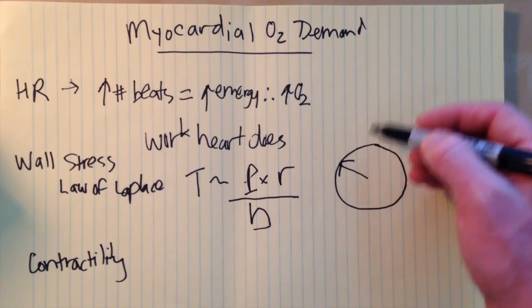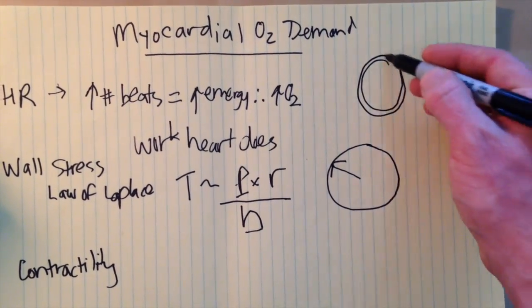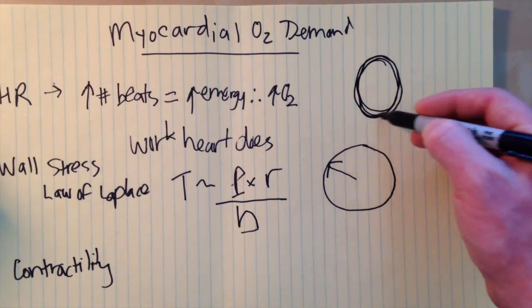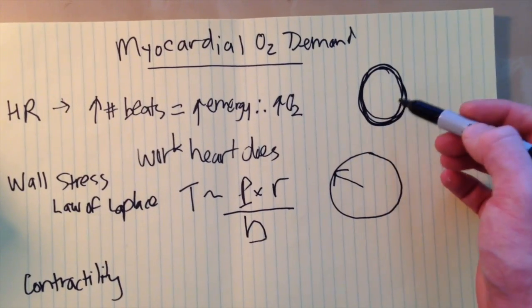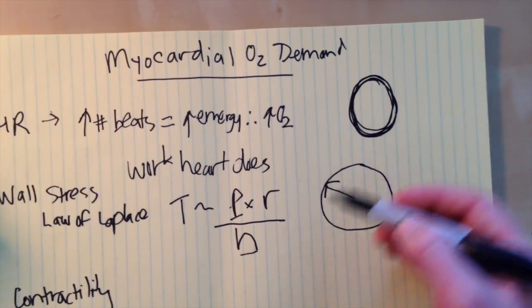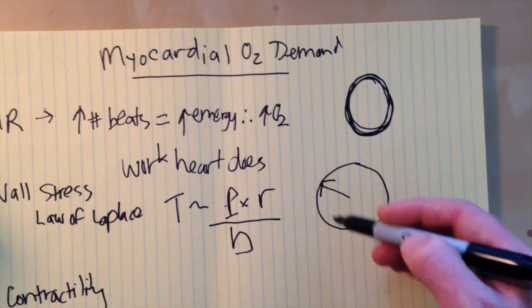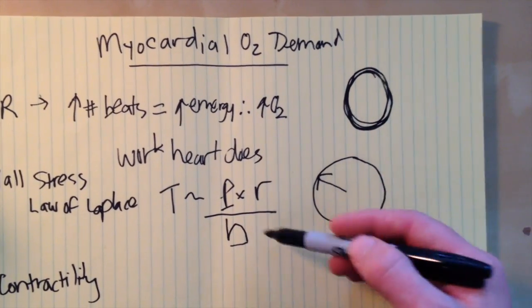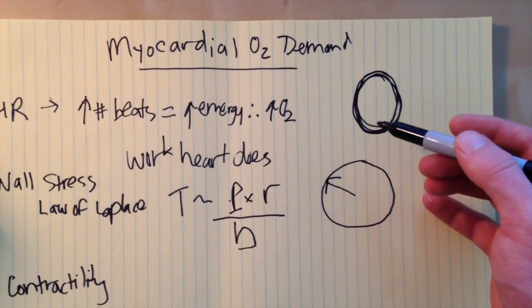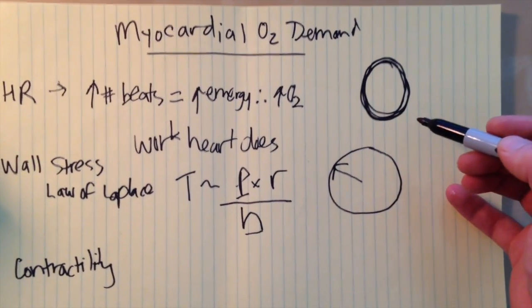The wall thickness, so if we've got a thin circle here and a thicker circle here, the work per unit thickness in the thick walled ventricle is actually going to be less than the work per unit thickness in a thin walled ventricle. And that's essentially saying that the same amount of tension or stress is being dissipated over a greater thickness of wall.